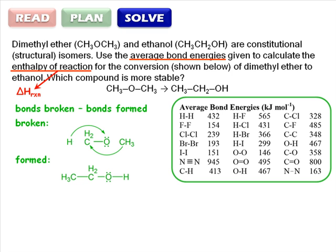A carbon-hydrogen bond has an energy of 413 kJ per mole. A carbon-oxygen bond has an energy of 358 kJ per mole. A carbon-carbon bond is 348 kJ per mole and an oxygen-hydrogen bond is 467 kJ per mole.